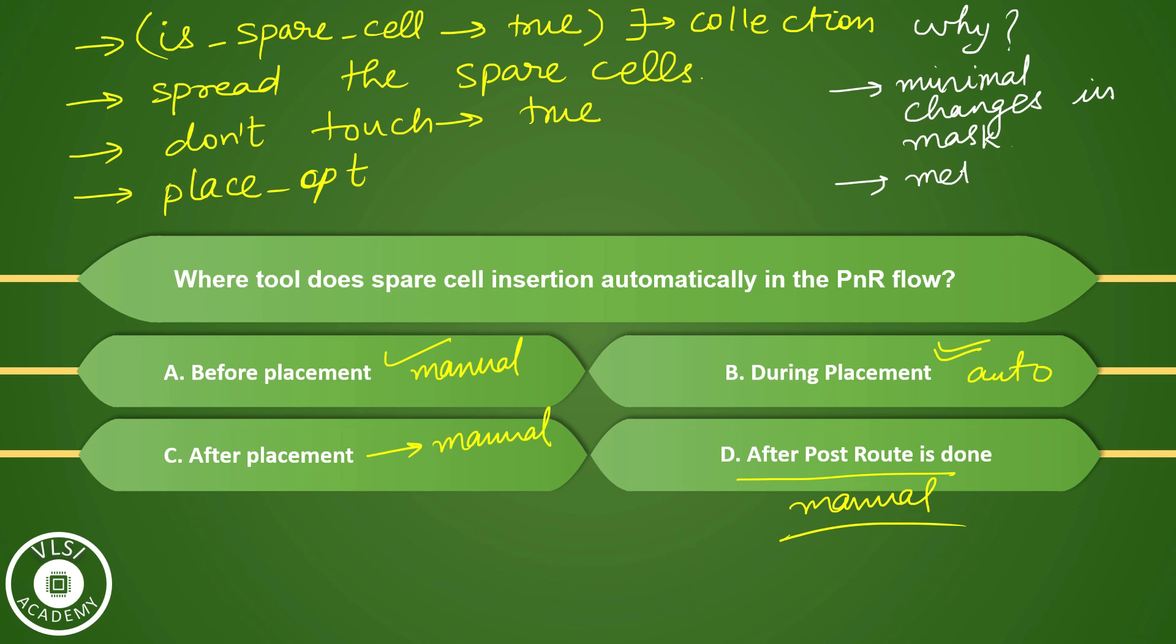So because we can use metal only ECOs, or you can say metal interconnect changes, metal only ECO, and based on that you can create a new cell for using in your design for timing or other purposes.